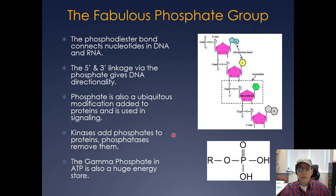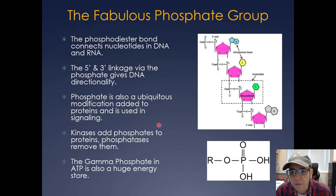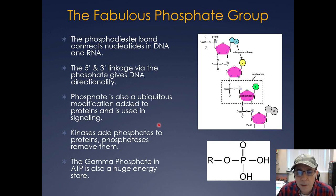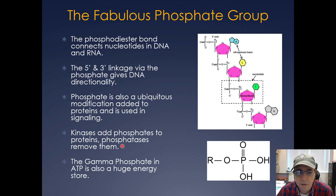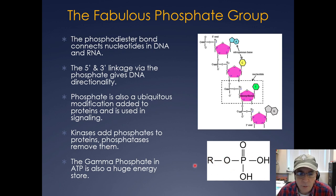Phosphate association with nucleotides in DNA actually gives the directionality. Phosphate is also a ubiquitous modification added to proteins — one of the most prevalent examples is the phosphate group added to proteins by kinases in cell signaling, which can be reversed by phosphatases that remove the phosphate group.